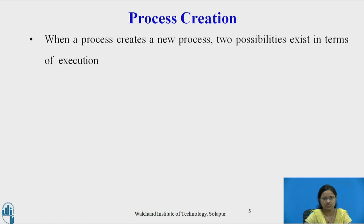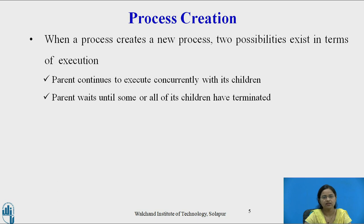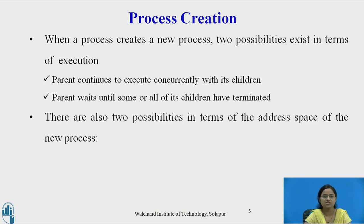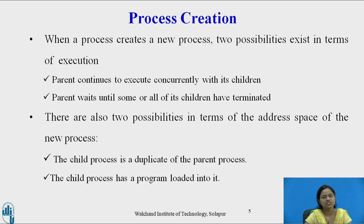When a process creates a new process, two possibilities exist in terms of execution. First, the parent may continue its execution along with the child process, or the parent may wait until some or all of its children have terminated. Again, two possibilities exist in terms of the address space of the new process: the child process is a duplicate of the parent process and can share the whole address space of the parent, or the child process may have its own program loaded into it.